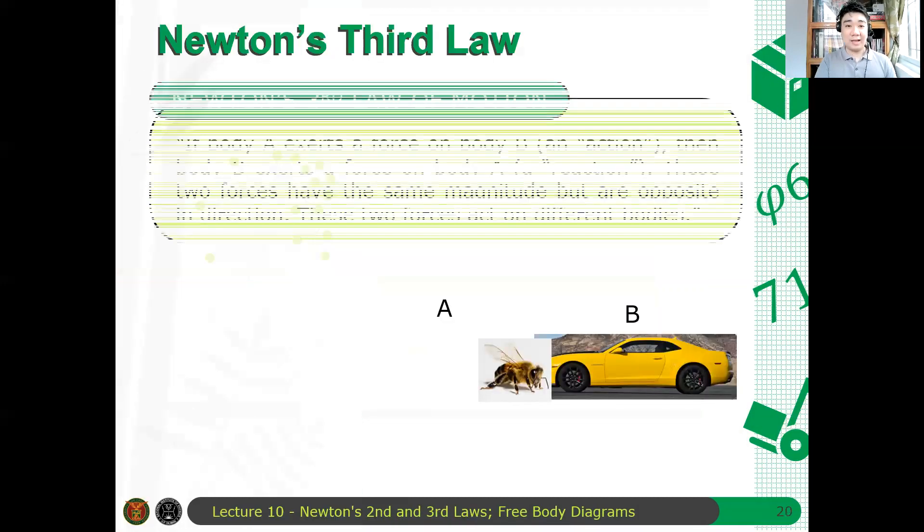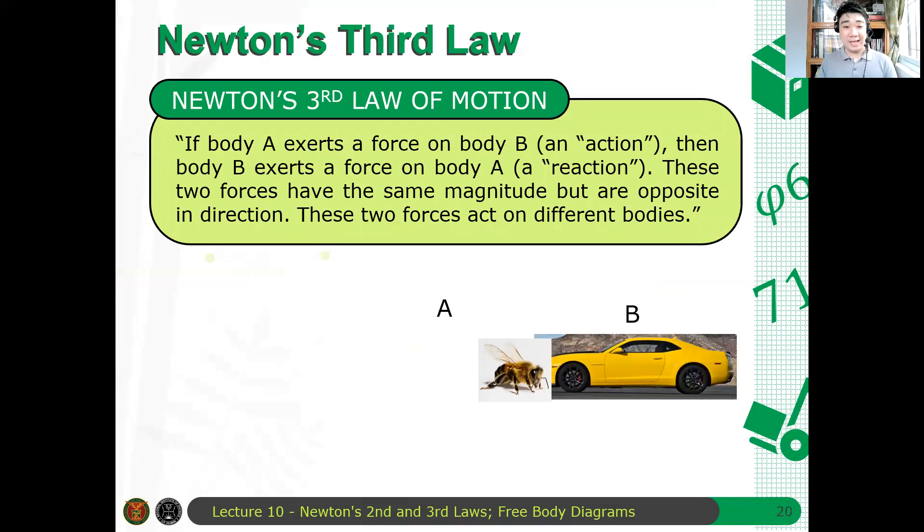So we will see that we have our Newton's third law of motion. If body A exerts a force on body B, then body B also exerts a force, a reaction force on body A. And these two forces have the same magnitude. They have the same forces, but opposite in direction. These two forces acting on two different bodies.